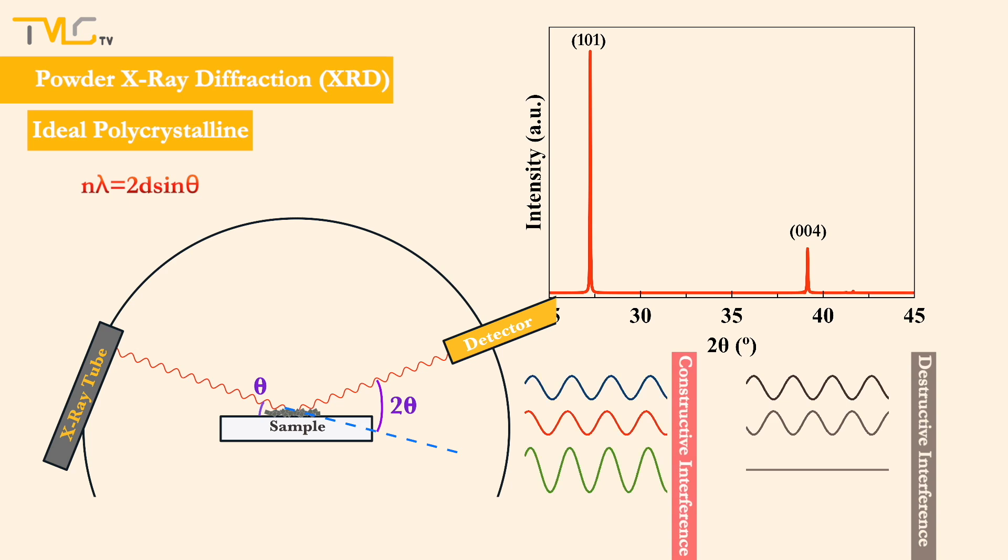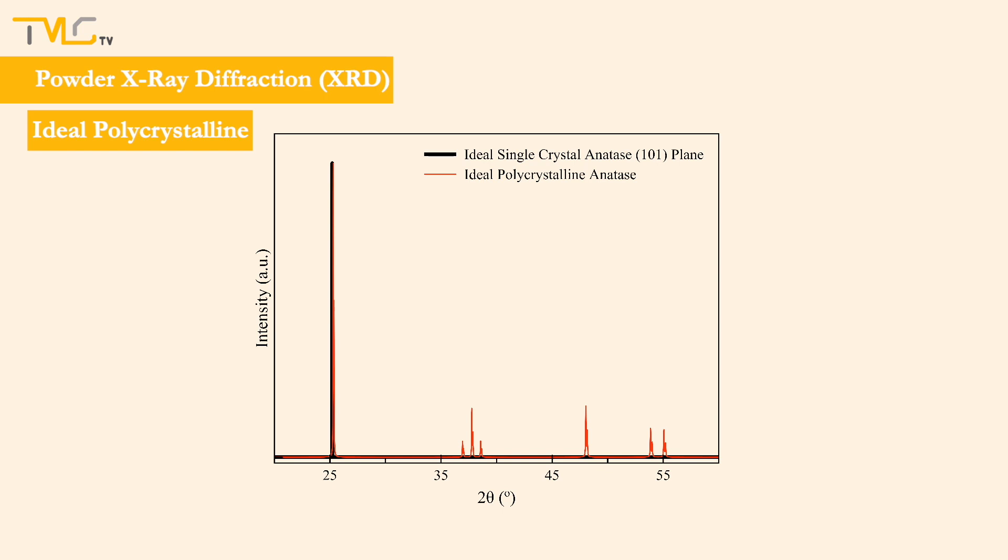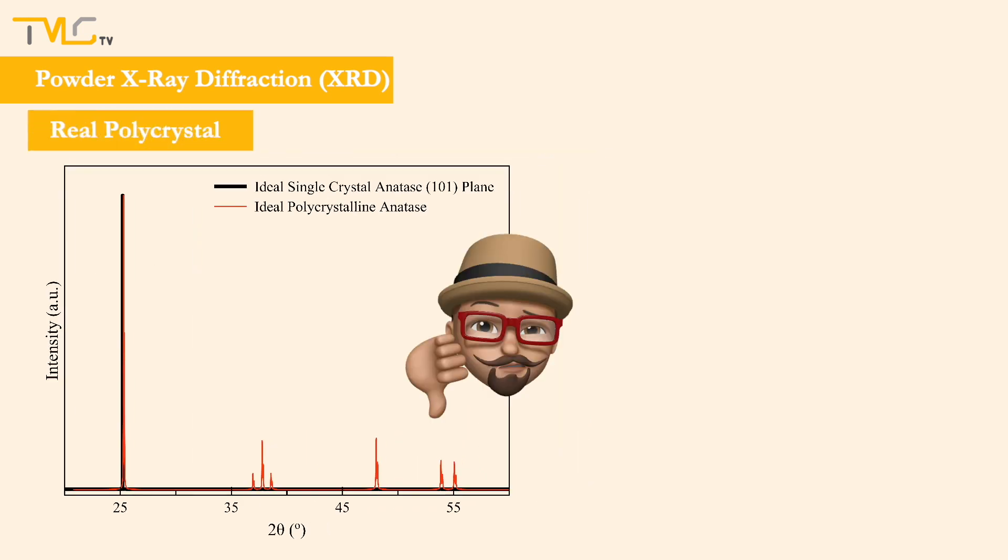Although for the second case, we are more down-to-earth, we are still far from real cases, due to the ideal polycrystal and systematic error-free diffractometer assumptions. In reality, neither of them exists.